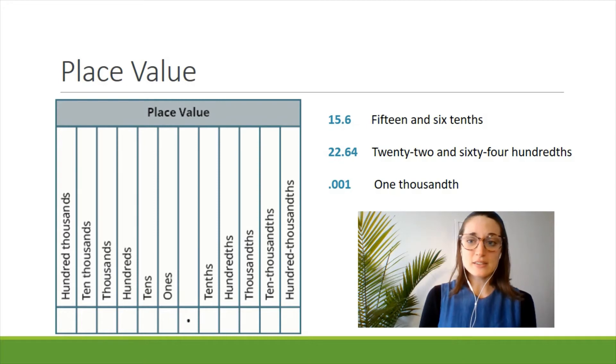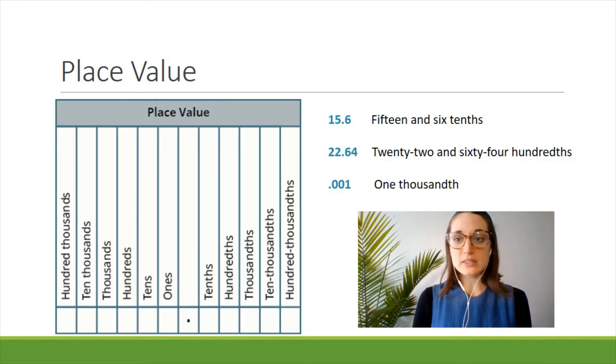The first example is read as 15 and six tenths. The six is just one place value after the decimal point, so we read it as six tenths. The second, 22.64, is read as 22 and 64 hundredths. The last one doesn't have a whole number, so we just read it as one thousandth because that number one ends in the thousandths place.